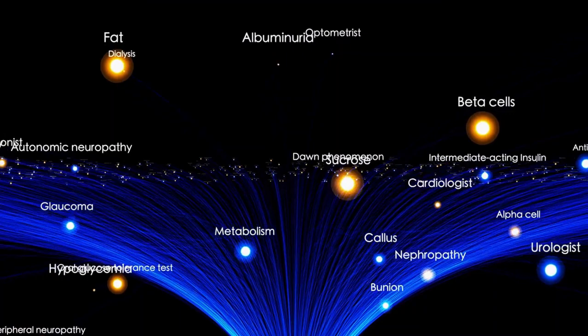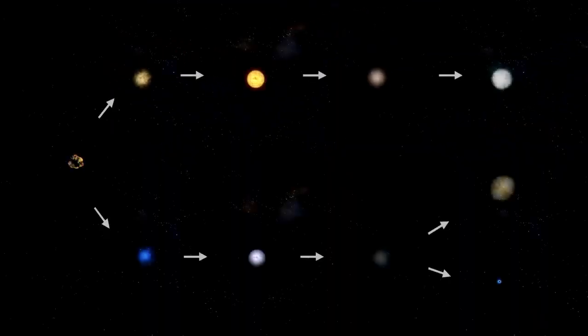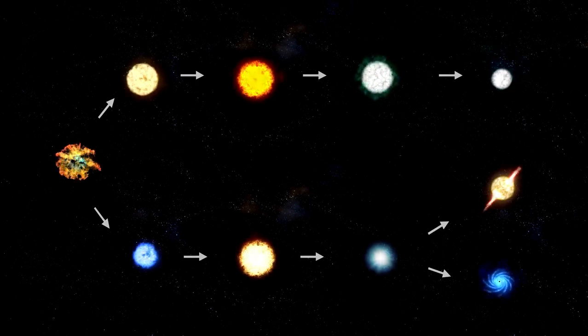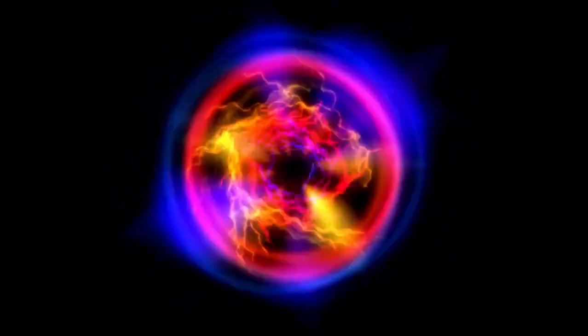Its current red supergiant phase is the culmination of millions of years of stellar evolution, a period marked by dramatic changes and processes that have transformed it from a hot blue star to the red giant we see today. The life cycle of stars like Betelgeuse is a story of transformation driven by the relentless forces of nuclear fusion and gravity.